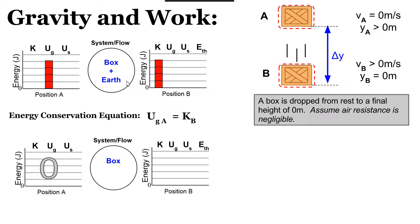At position B, the box is moving, so it does have kinetic energy. How did the box gain kinetic energy from position A to position B? Energy must have been transferred into it — positive work must have been done. That requires an external force on the box in the same direction it's displaced. The force of gravity is exactly that: if we take the earth out of the system, gravity becomes an external force, doing positive work on the box equal to the kinetic energy it gained.